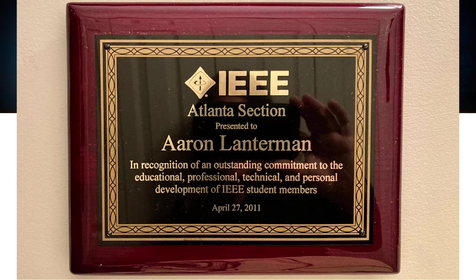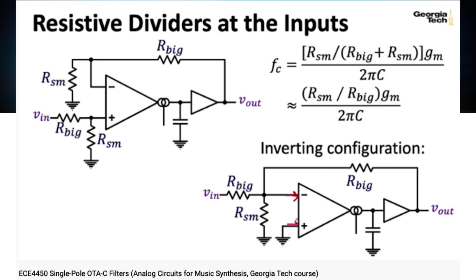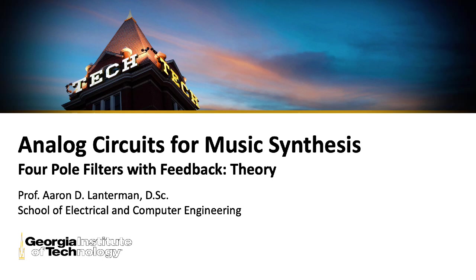In the last lecture, we looked at a way to create a one-pole filter with an operational transconductance amplifier and a capacitor and possibly a few resistors. Now, one-pole filters aren't very interesting, and today we'll look at four-pole filters of a particular form.